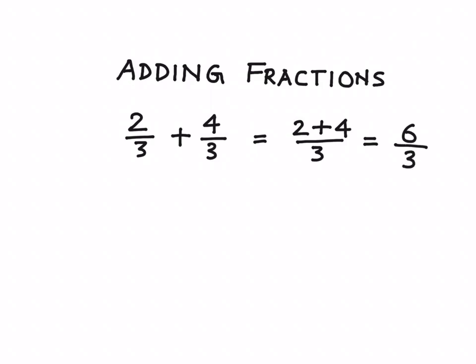Let's take a complex example where we have different denominators. So let's say we want to add 2 by 3 and 4 by 5. Now both these fraction numbers have got different denominators. So how do you add such fractions? By the way, such fractions are called unlike fractions.